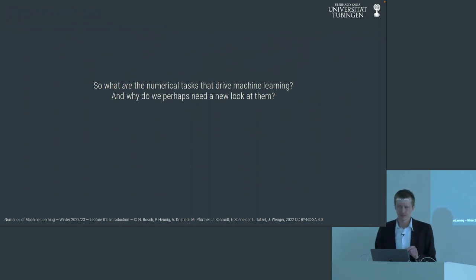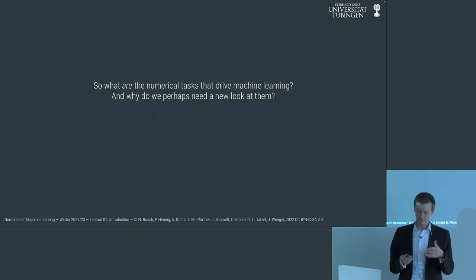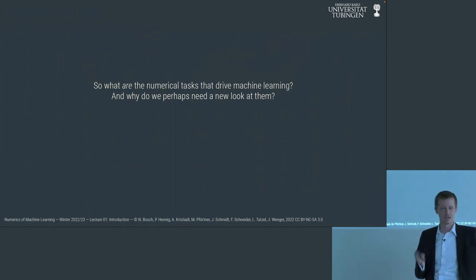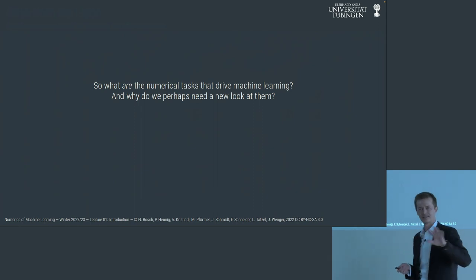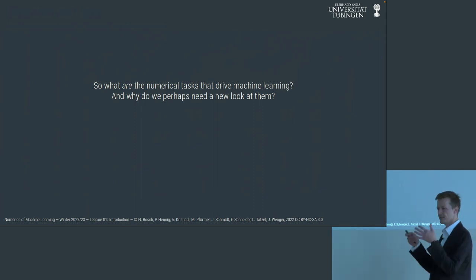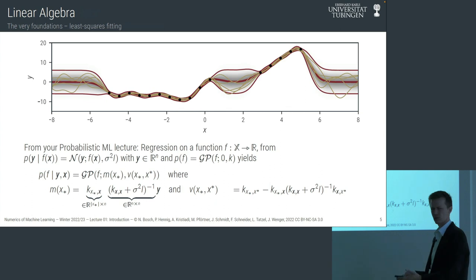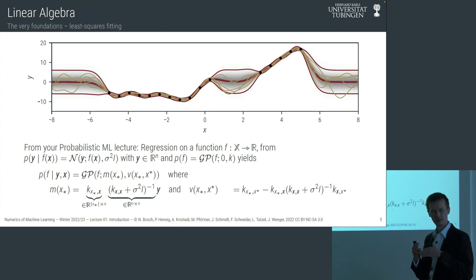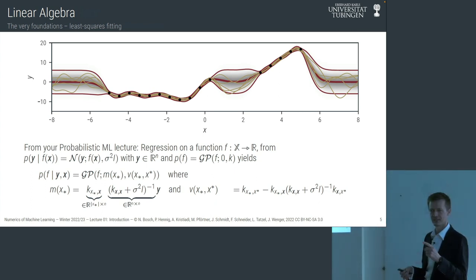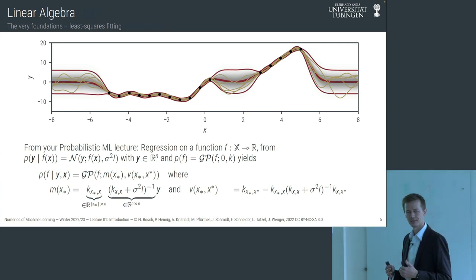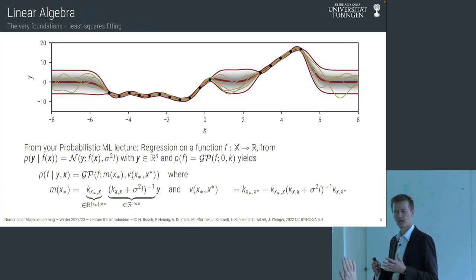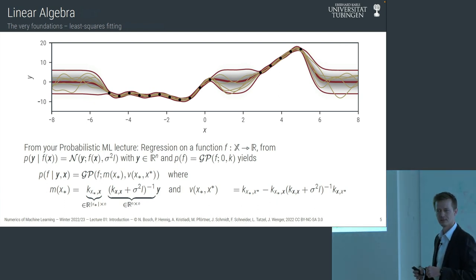Now I want to introduce the content of the lecture course while giving you an overview of the numerical algorithms needed in machine learning. The first class we'll look at is linear algebra methods. If you've taken the probabilistic machine learning class by Jakob Macke, you've heard about Gaussian process regression as a base case of Bayesian inference — learning a function from observations and interpolating between those points with uncertainty.